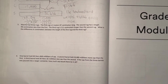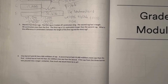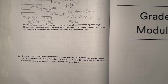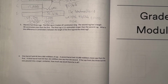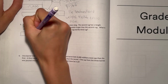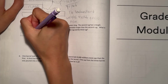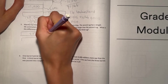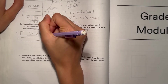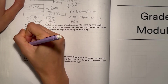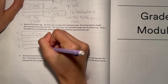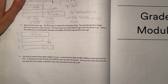Number 5. Marsha has three rags. The first rag is 2 meters, 87 centimeters long, which is 287 centimeters. The second rag is 97 centimeters less than the first. The third rag is 11 centimeters longer than the second rag. What is the difference in centimeters between the length of the first rag and the third rag? The second rag's length we don't know, but it's 97 centimeters less than the first. The third is at least as long as the second, but 111 centimeters longer.